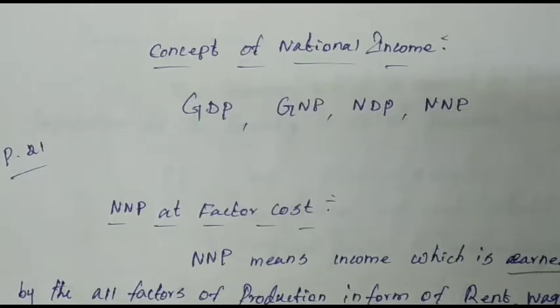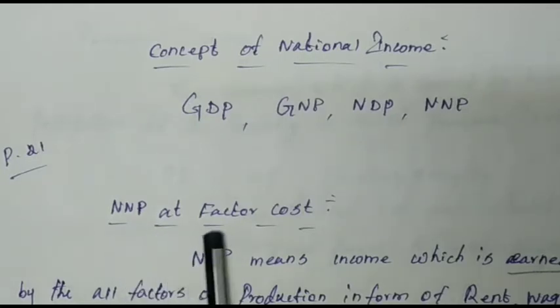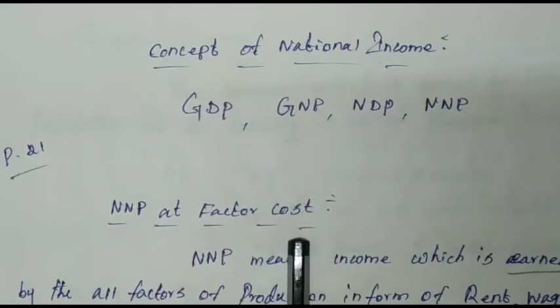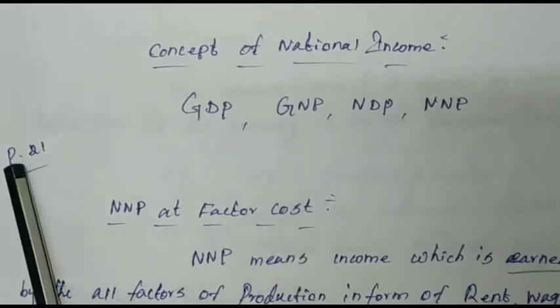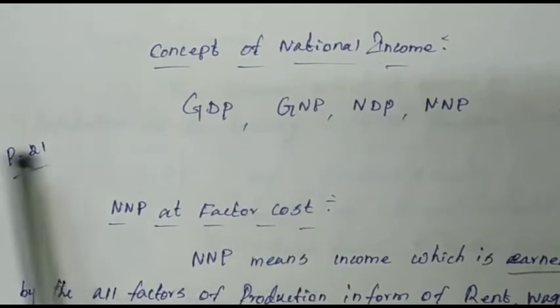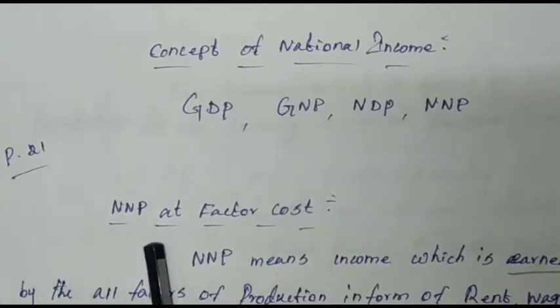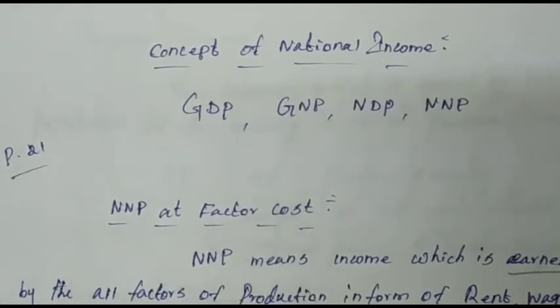Today we are discussing only NNP at the factor cost, on page number 21 in the PIS2 economics book.